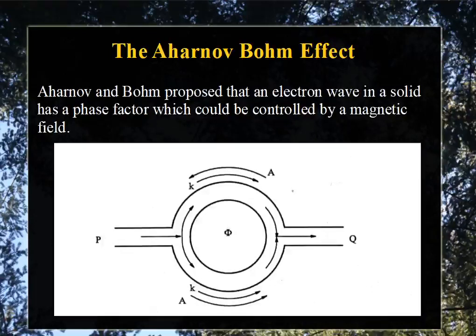Aharonov and Bohm proposed that an electron wave in a solid has a phase factor which can be controlled by an external magnetic field.